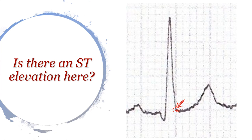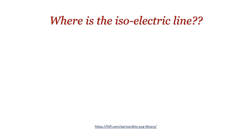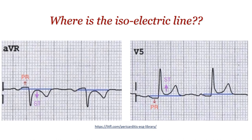It's all about where the baseline is. This is a very common mistake that I personally used to make — and when I learned about it, it changed my whole way of looking at ECGs. I used to use the PR segment as my baseline, comparing the J point to the PR segment. This is wrong, because the PR segment is a dynamic segment — it can go up and it can go down — and it doesn't make sense to compare two dynamic points.